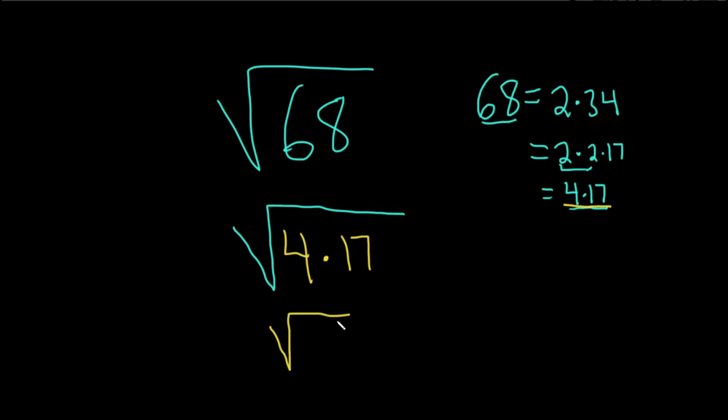You can take the square root of 4. And then here you have the square root of 17. And the square root of 4 is 2. So this is 2 square root 17.